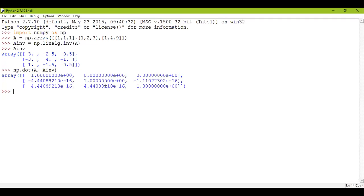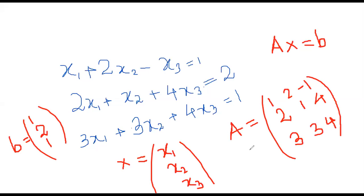I'll share my screen — please pardon my handwriting. I have taken three equations. The first is x1 + 2x2 - x3 = 1. The second equation is 2x1 + x2 + 4x3 = 2. And the third equation is 3x1 + 3x2 + 4x3 = 1.